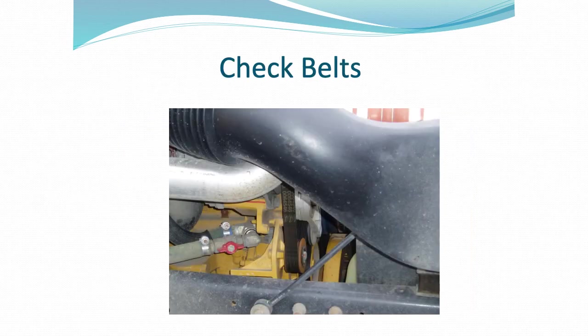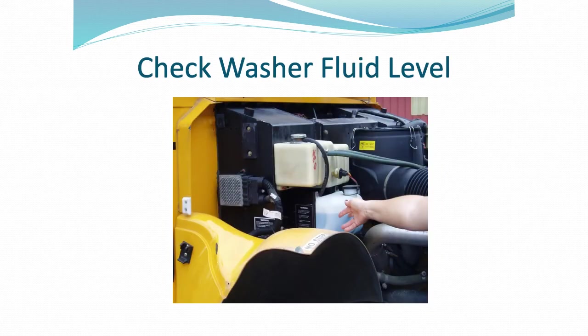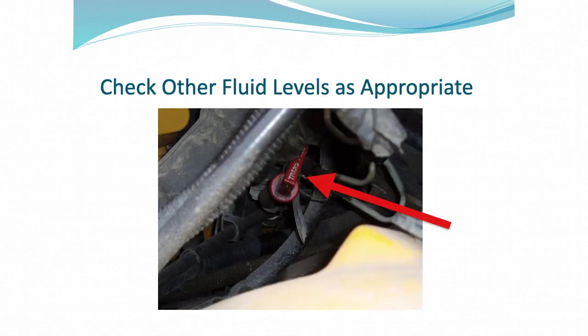On your belts under the hood, look for dry rot. Look to see if they are frayed, cracked, loose, or even missing. There should be no more than one-half to three-quarters of an inch of movement when you pull on the belts at the center between the pulleys. Many drivers carry a bottle of washer fluid in the storage compartment of the bus. Each bus will be different, but know and learn the other fluids to be checked under the hood, such as transmission fluid. Other fluids include power steering, hydraulic brake, and coolant level fluids.